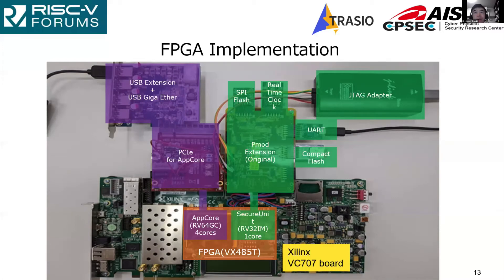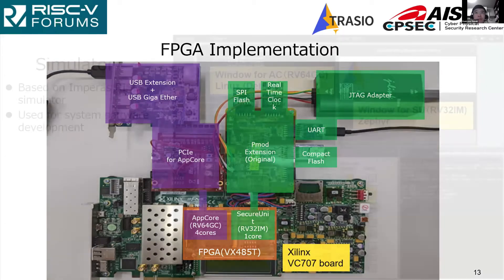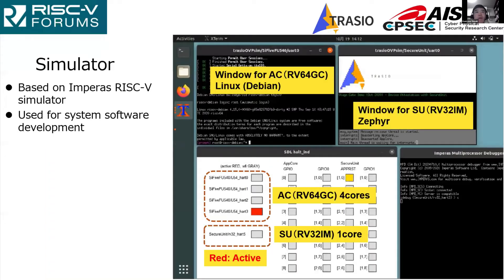This figure shows an FPGA implementation. We use Xilinx VC707 to implement trusted RB. Secure Unit has its own peripherals isolated from AppCore. The peripherals are SPI flash, real-time clock, UART, and compact flash. We also made a simulator based on the Mplus RISC-V simulator. The simulator offers a window for AppCore UART and Secure Unit UART, and has an indicator showing the activity of cores.